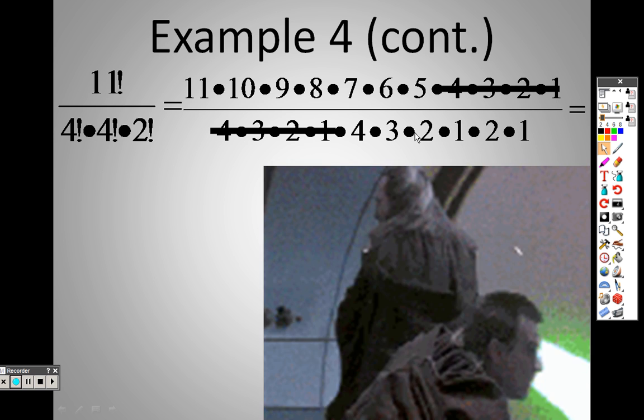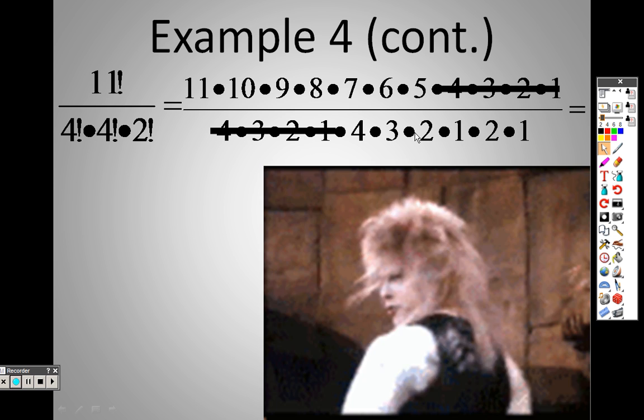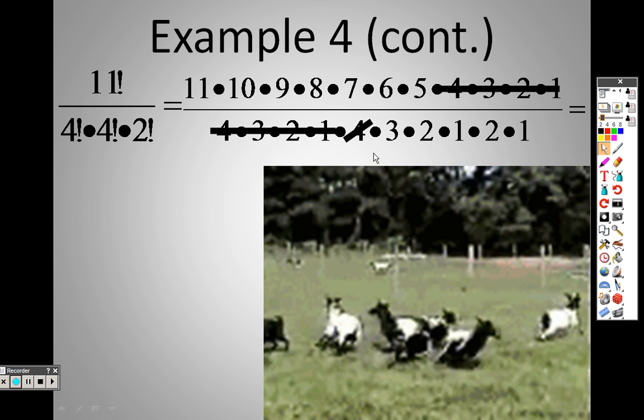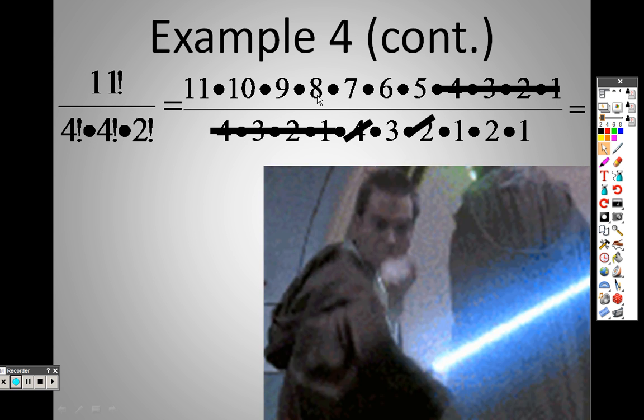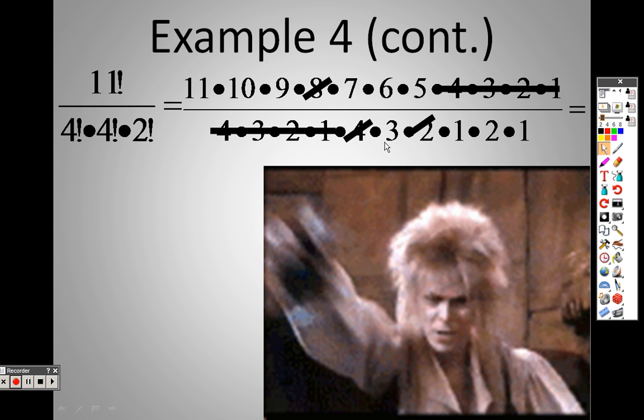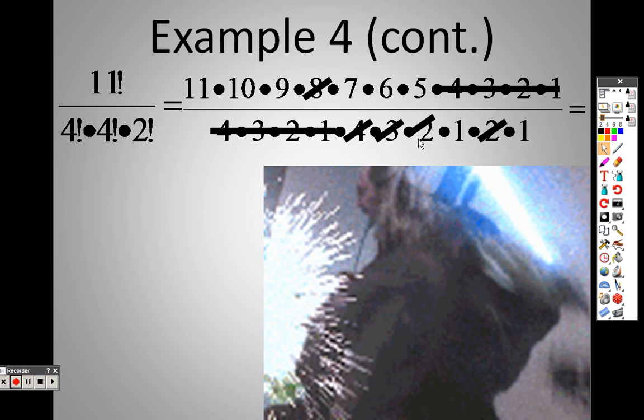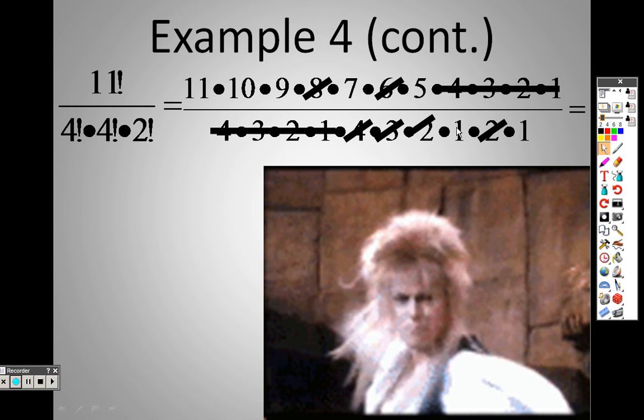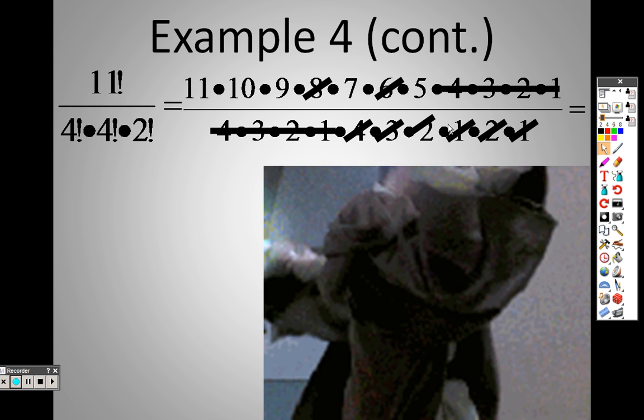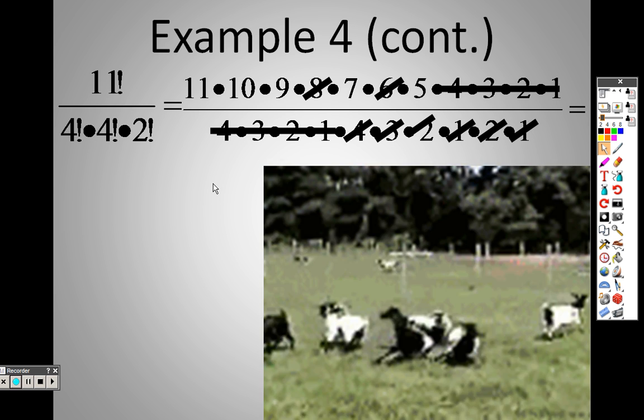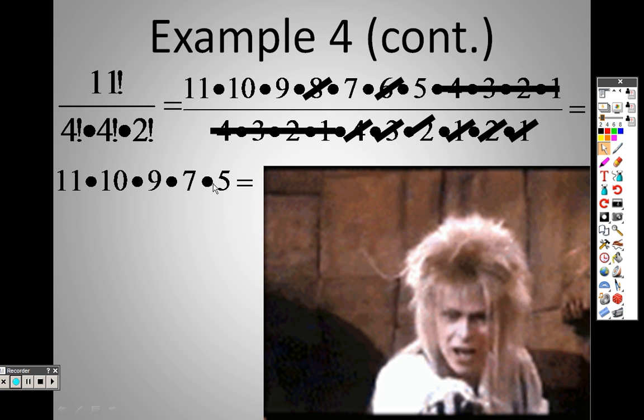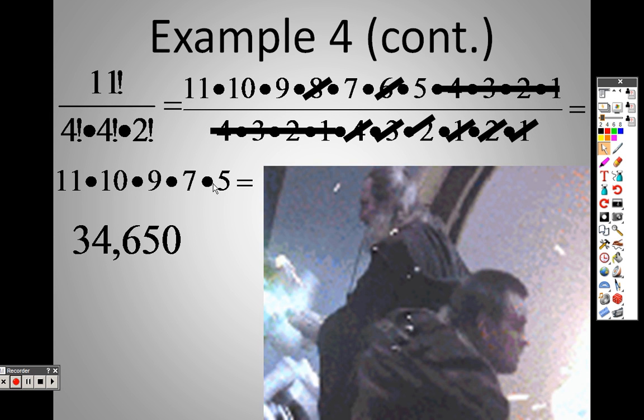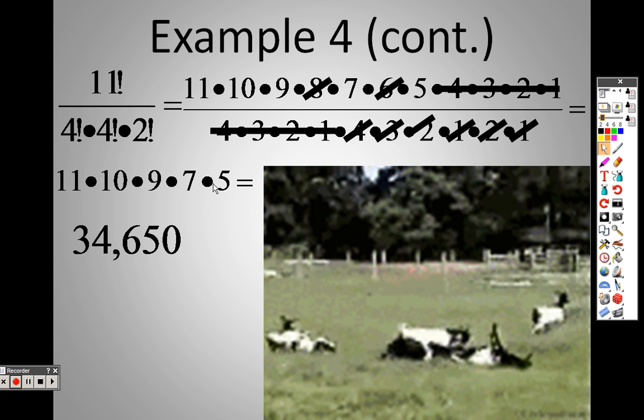I noticed there is a four the whole way down to one twice, so I cross those out. Then I can get trickier: 4×2 is 8, so I cross that out. 3×2 is 6. On your calculator, all you really got to do is type in 11×10×9×7×5. Thirty-four thousand six hundred and fifty is your answer.